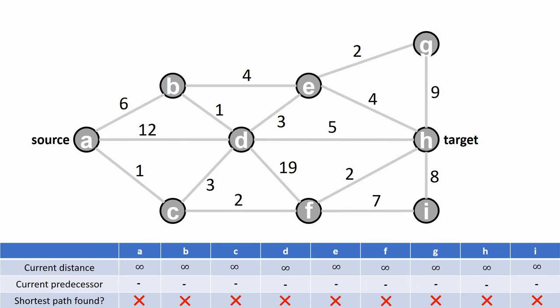In the very first step, we color the source vertex green and update the distance to zero. Now we look at the three neighbors of A. Vertices B, C and D have now a distance of 6, 12 and 1 to the source vertex A and we update this information in the table. Also we update the predecessor of B, C and D to vertex A.